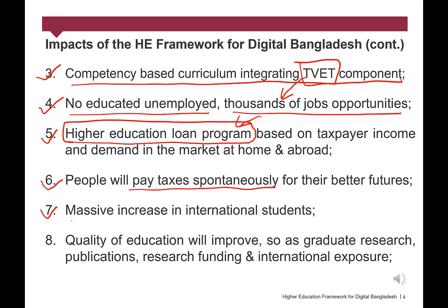Number 7: Massive Increase in International Students. Our undergraduate education quality is comparatively better, so as our teacher-student ratio, but still we have poor rankings of higher universities. One of the main reasons is the number of international students. In Times Higher Education Ranking 2020, only Dhaka University is listed in the 1001-plus range from Bangladesh and unfortunately has 0% of international students, whereas most of the Australian universities have around 40% international students and thereby earn billions of dollars every year from international student population.